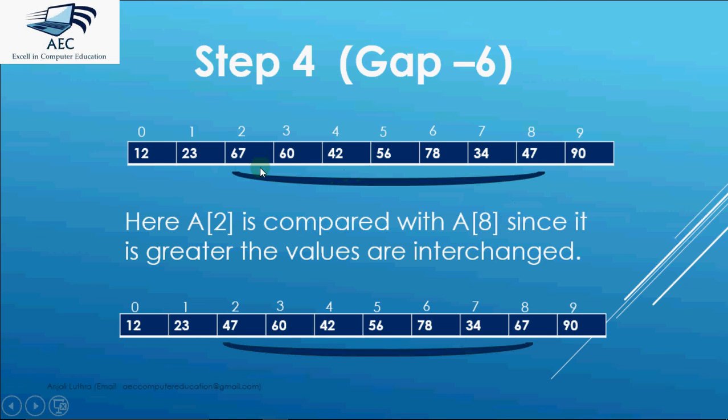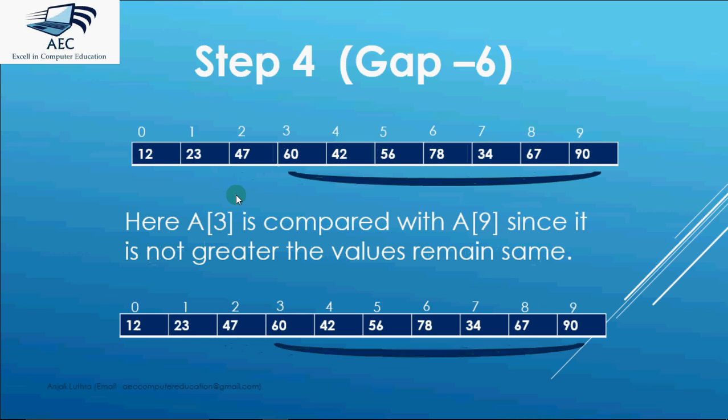67 is greater than 47. So we interchange the values. Then a[3] is compared with a[9]. So these were the 4 comparisons in step 4.